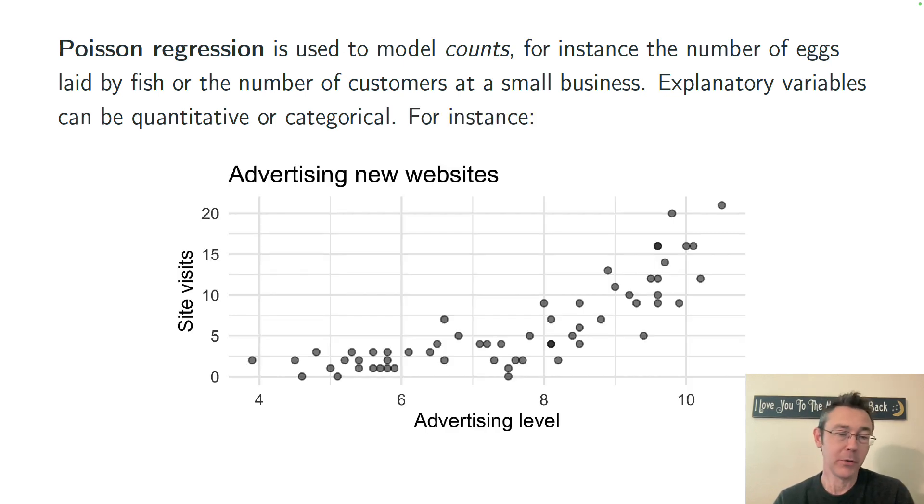Here's an example to keep in mind. I'm imagining we have a bunch of new websites by small businesses, and they're advertising different amounts. And we're keeping track of the number of site visits to those websites based on different advertising levels.